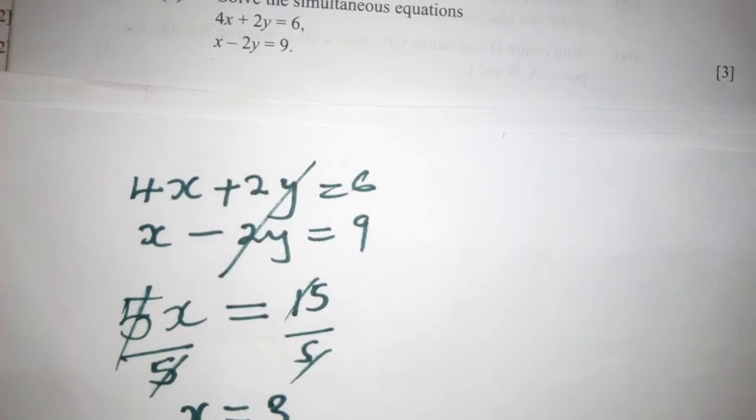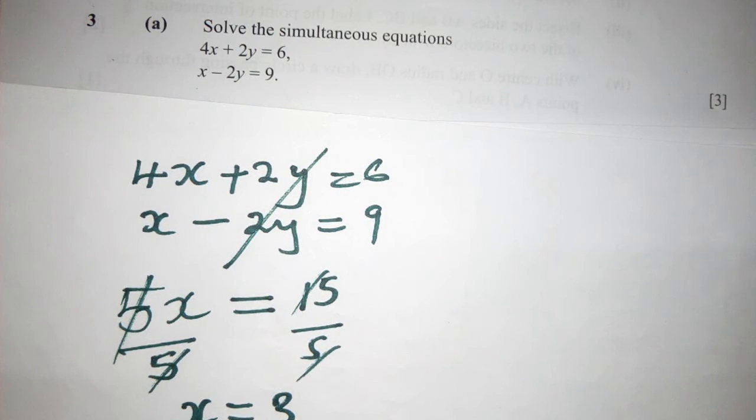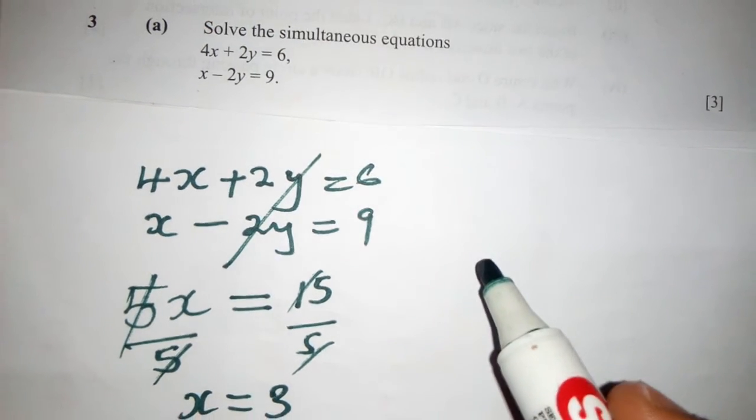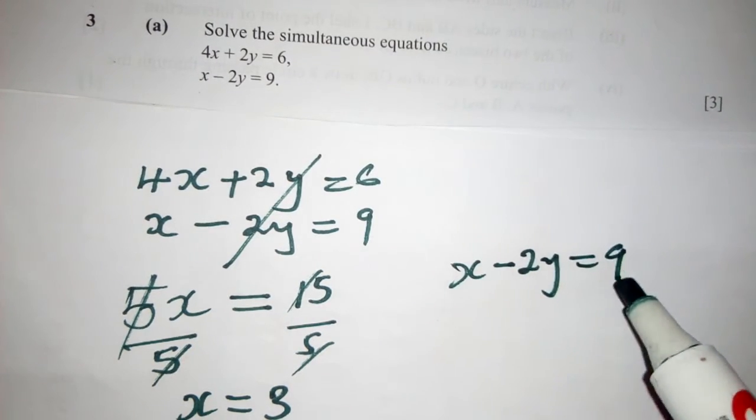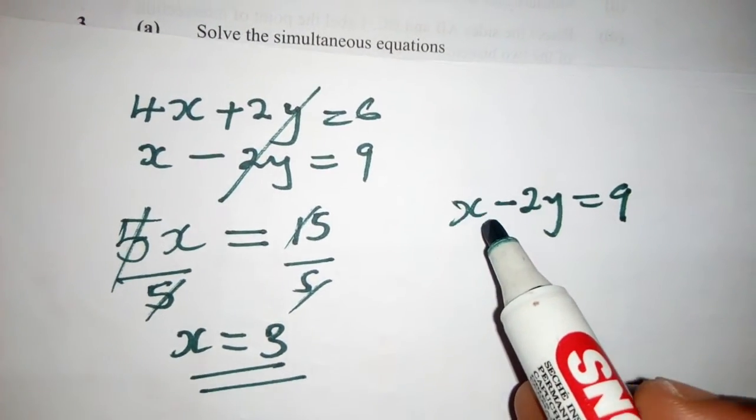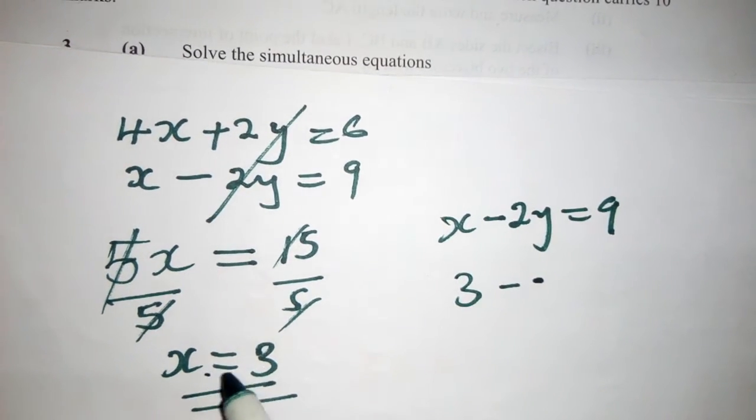Then the next step, you get the value of x you've just found, put in one of the equations. So I will get the second equation. Then where there is x, I'll put 3, the value of x here is 3.